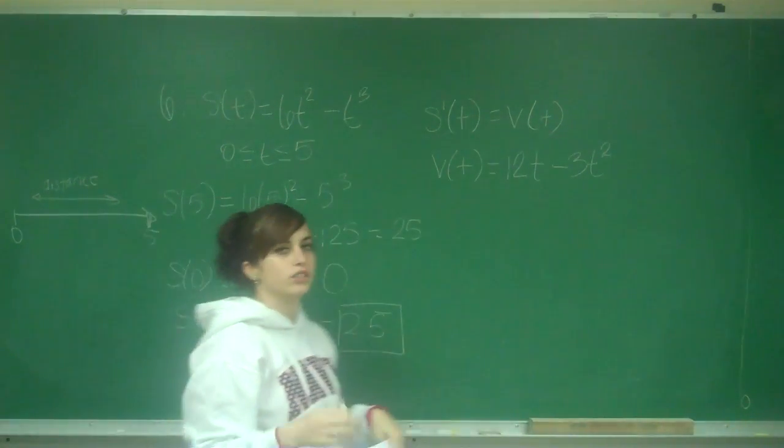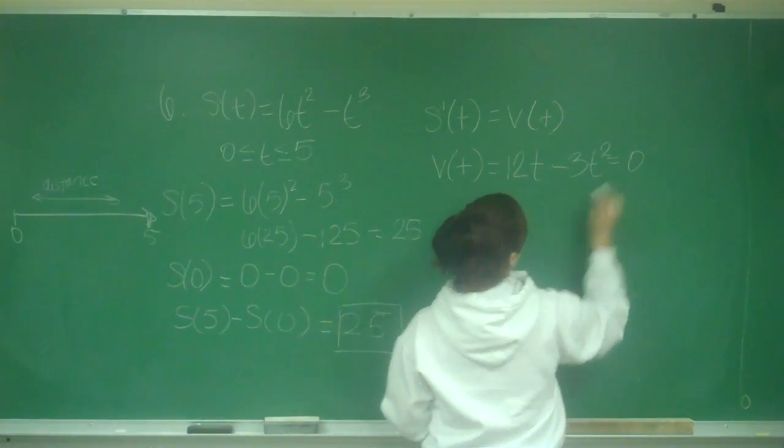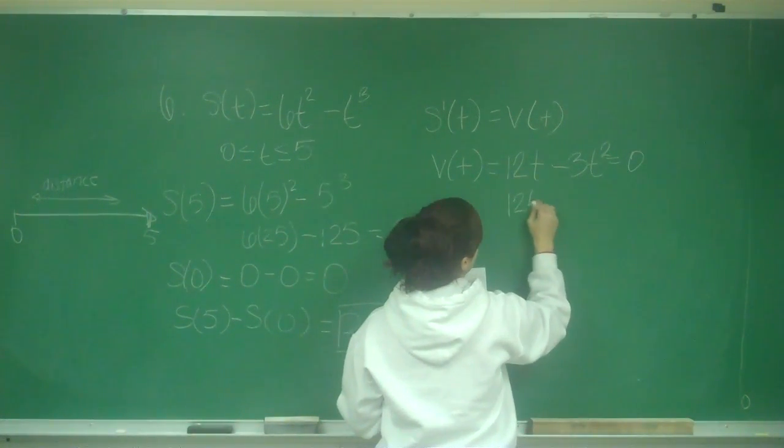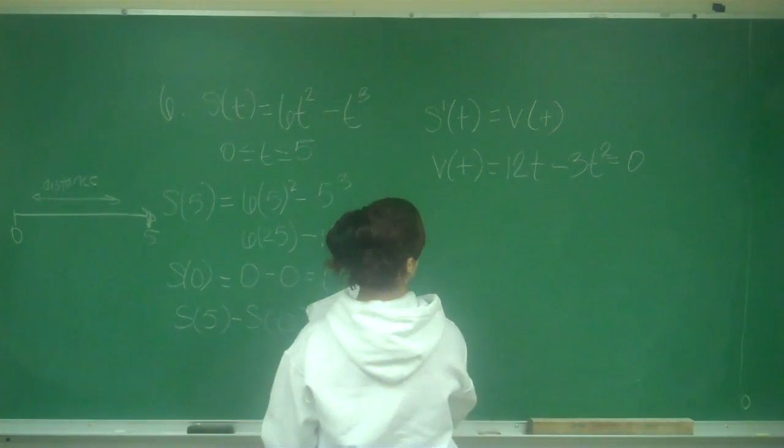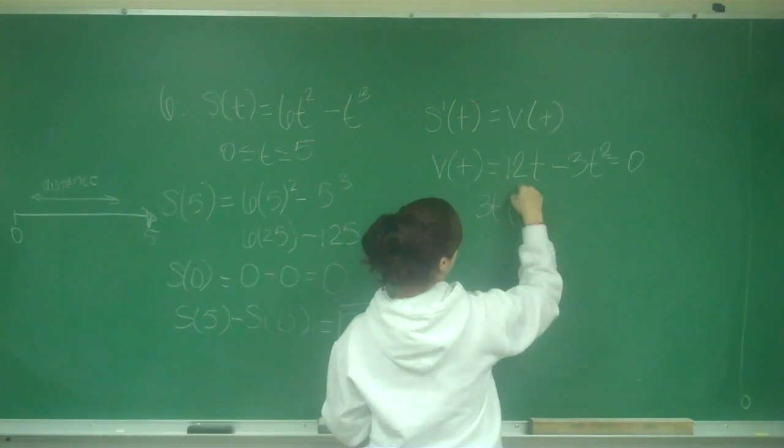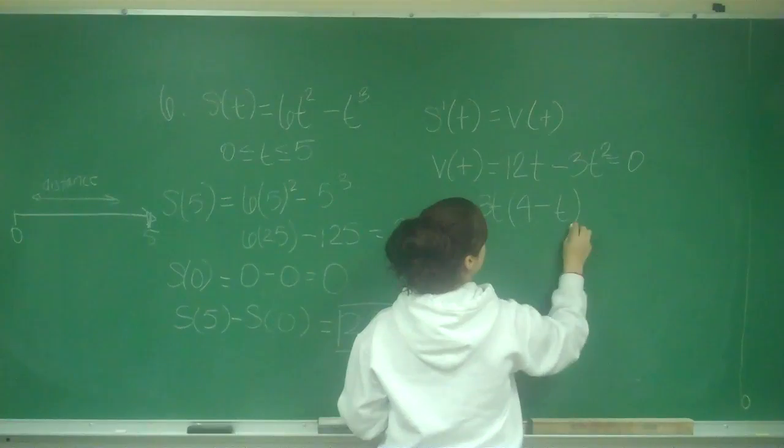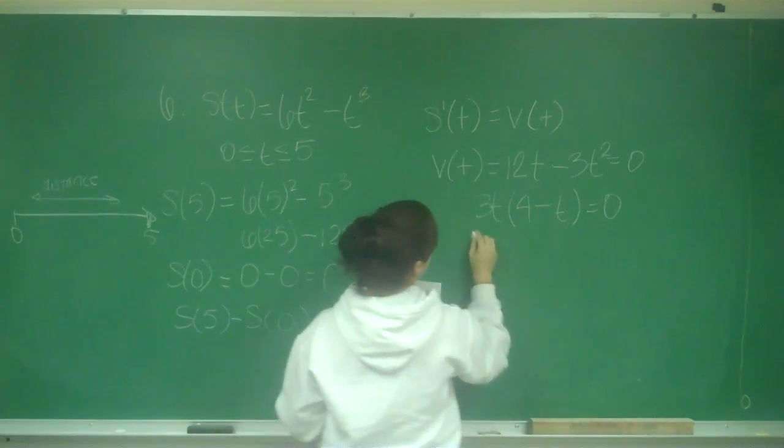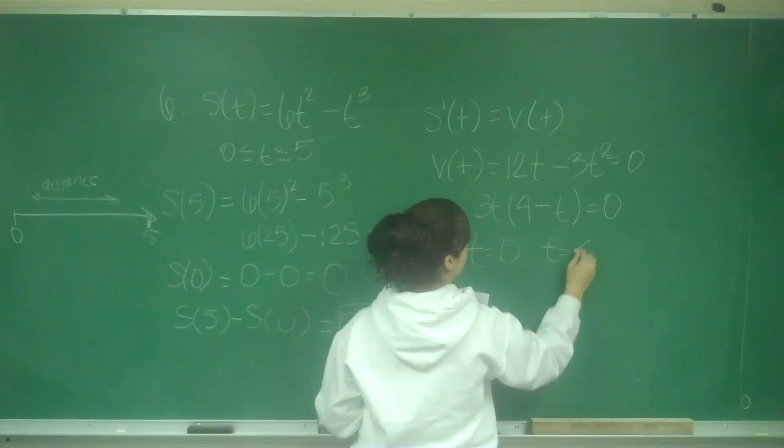Now I'm going to set that equal to 0 to find the critical values. So I have 12t. I'm going to factor. So I'm going to factor out a 3 and a t. So I'm left with 4 minus t equals 0. So I have t equals 0 and t equals 4.